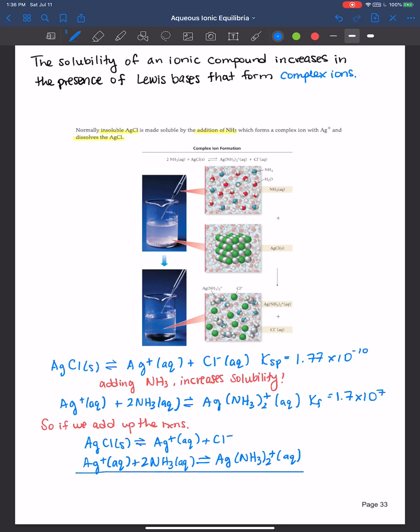Then we can cancel out like species on opposite sides, so the silver here. And the overall reaction we would have would be silver chloride plus ammonia gives you the silver ammonia complex ion plus chloride.